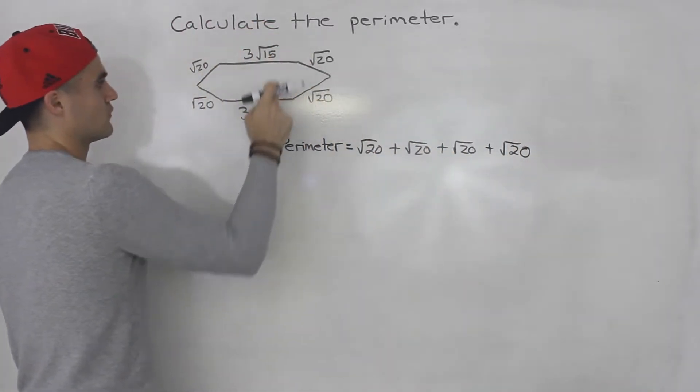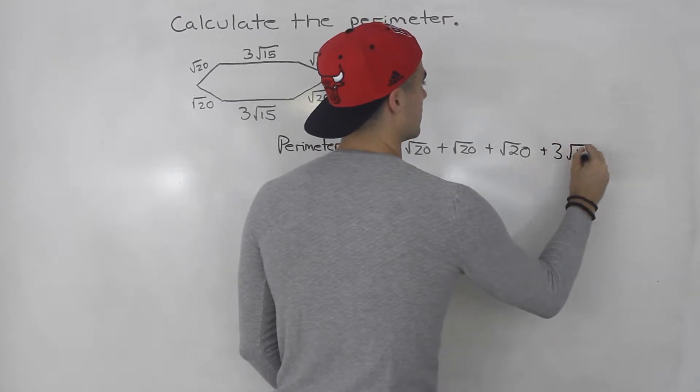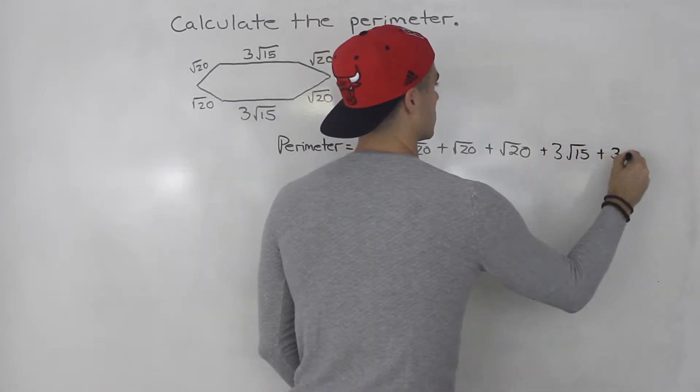And then we'll be adding three root 15 twice. So plus three root 15 plus three root 15.